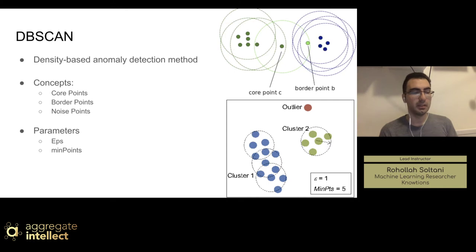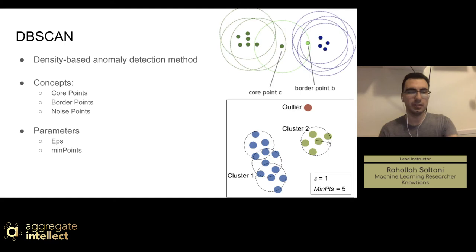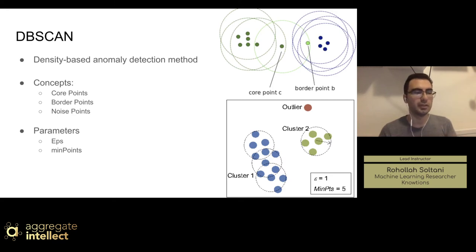DBSCAN has three important concepts. First, the core point, which defines the cluster based on the hyperparameters or parameters we will see later. There is also a border point, which is in the same cluster as a core point but is further away from the center of the cluster. And lastly, everything else is called a noise point — these are data points that do not belong to any cluster.